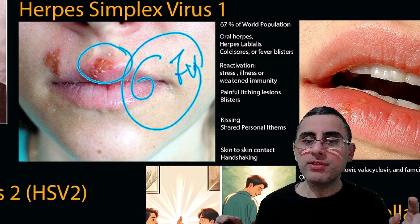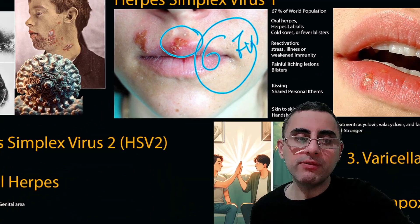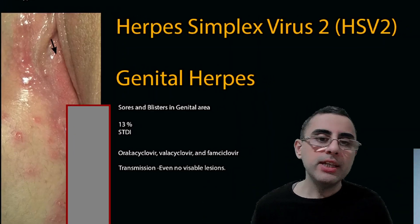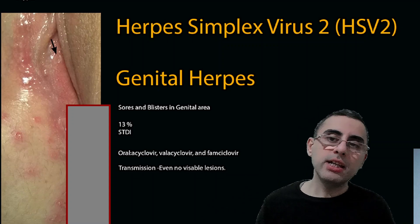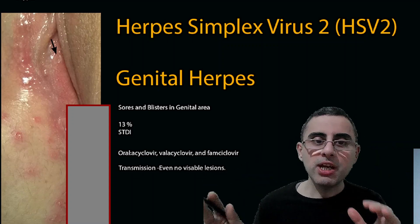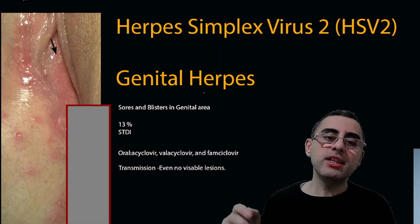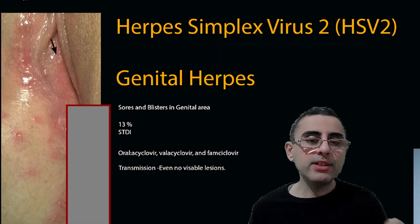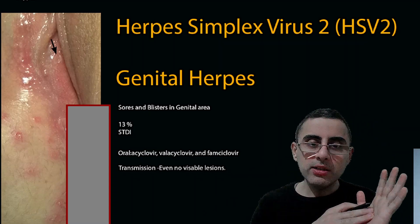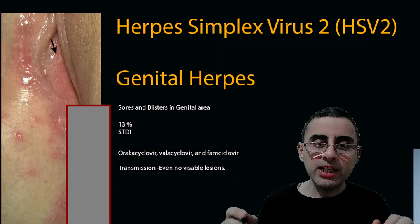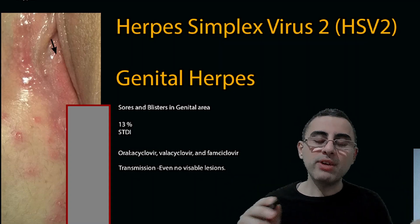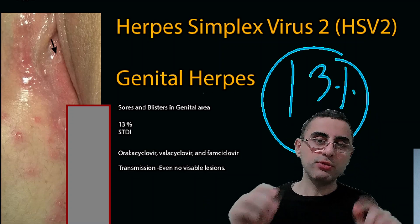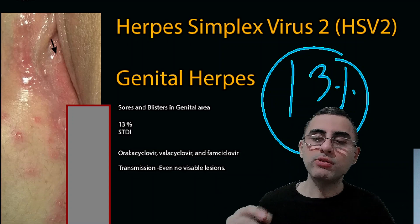Herpes simplex virus 1 is an extremely common infection, affecting around 67% of the world population. The second is herpes simplex virus 2. It looks like type 1 but it affects the genitals. It is a sexually transmitted disease, and even if a person has no visible lesions on the skin, it is still possible to transmit the infection. It affects around 30% of the world population.